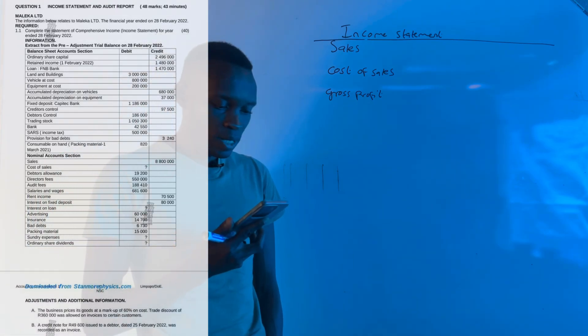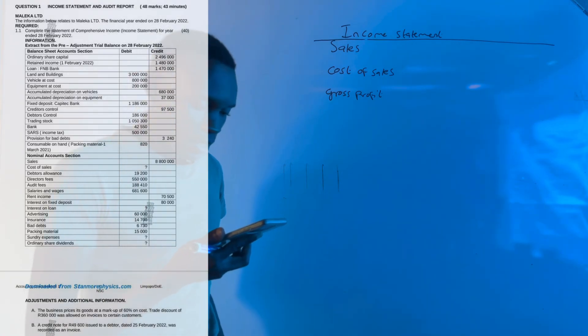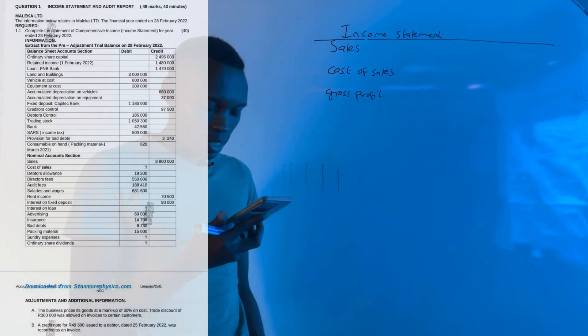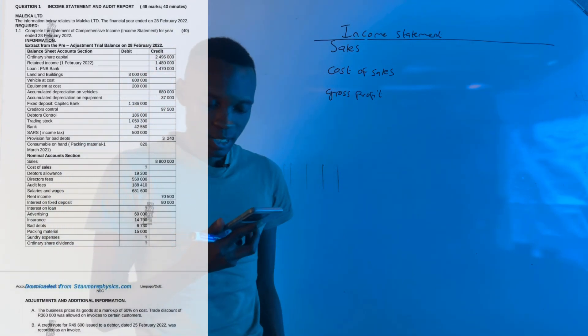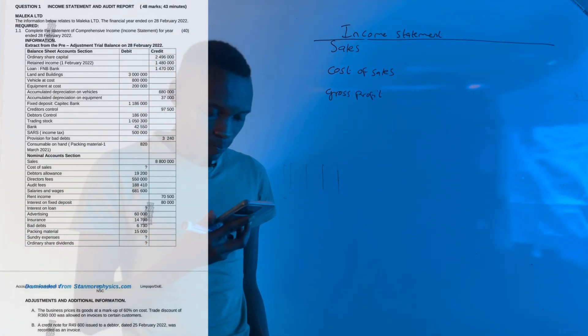Complete the statement of comprehensive income - it was 40 marks. Then they give us a trial balance and the transactions.